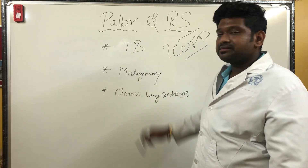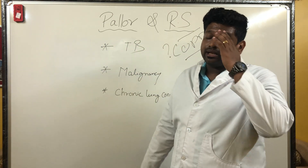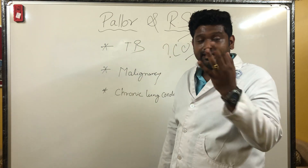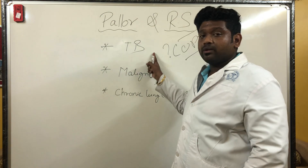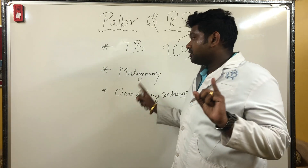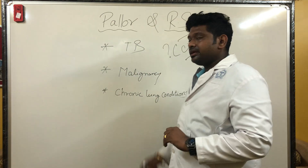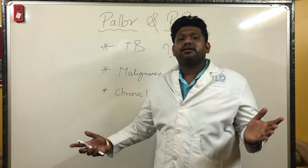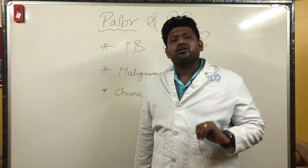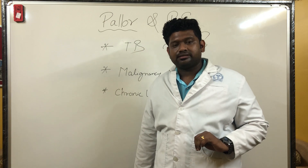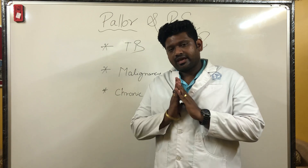In summary, regarding pallor and the respiratory system: number one is tuberculosis, number two is malignancy, number three includes other chronic lung diseases and long-standing hemoptysis. Thank you.